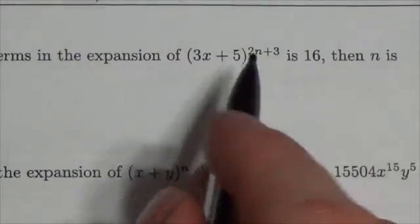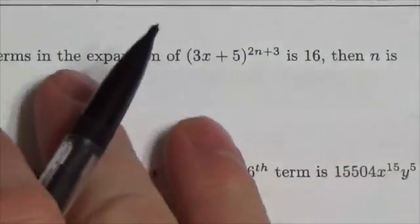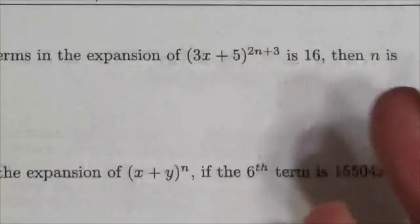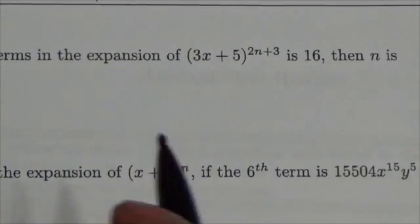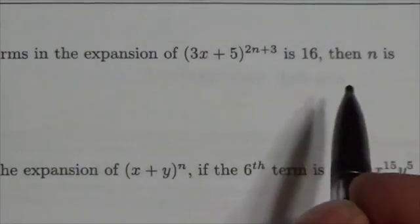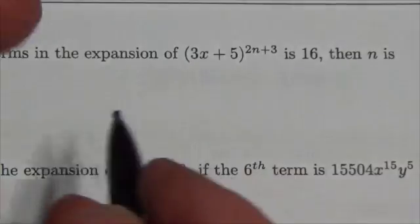And that's because when we list off the terms, we always start with a zeroth term. I know this is a bad way to count, but it helps to think of it this way. We always start with the zeroth term and count up to the exponent, which means we're adding a term at the beginning.